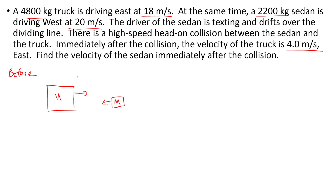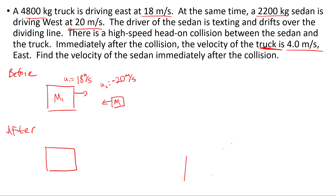The truck is going east at 18 meters per second. The sedan is going west, so that's negative 20 meters per second. After the collision, the truck is still moving to the east at positive 4.0 meters per second. Our unknown is V2, the final velocity of the sedan.